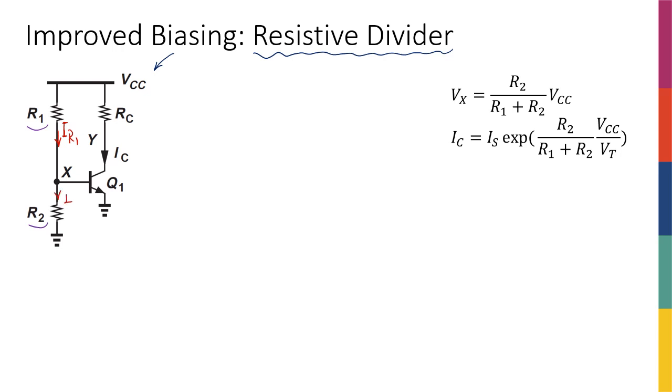And then I have a current here, IR2, and I have an IB here, the base current. And I know that KCL tells me that IR1 is equal to IR2 plus IB.